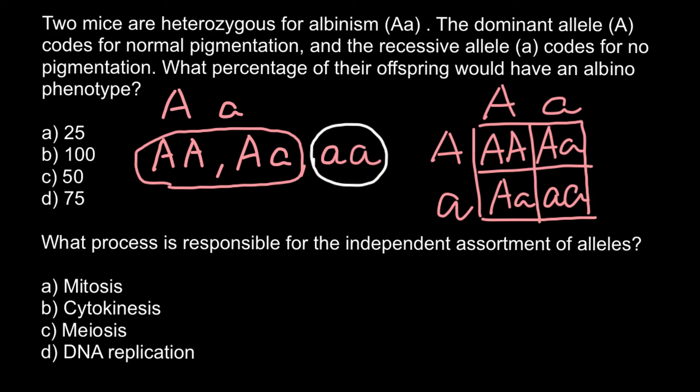As you see, three out of four genotypes would make one phenotype, which is 75%, and one out of four would make the albino phenotype, which is 25%. So the correct answer would be answer A, 25.